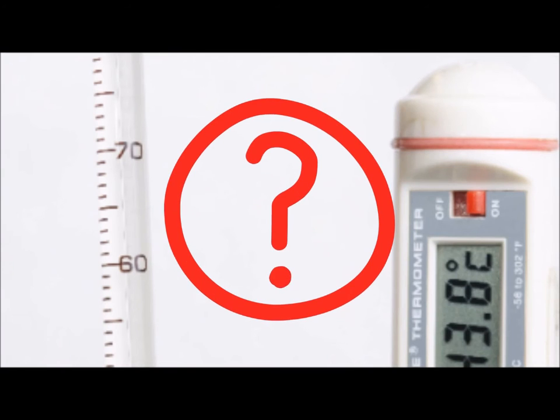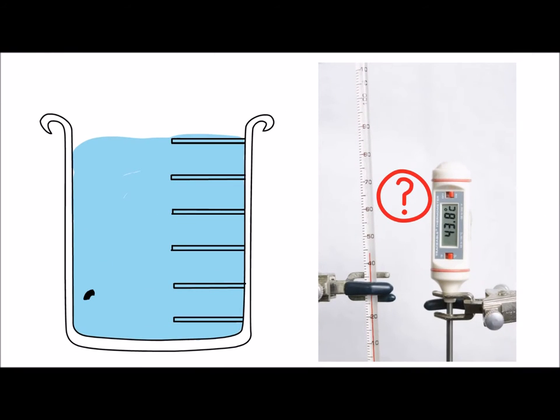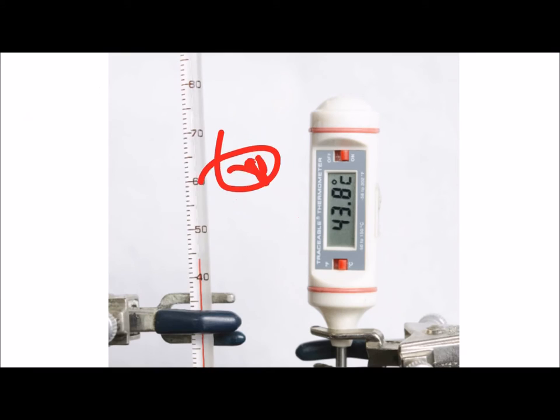The answer lies in the requirements of the experiment. Room temperature is a general statement for approximately 22 degrees Celsius. We would use the traditional thermometer because it has the required precision for our purposes.